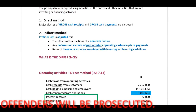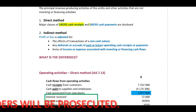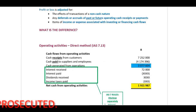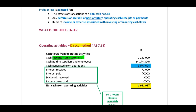The direct method presents the major classes of gross cash receipts and gross cash payments. Your direct method template starts with cash receipts from customers and cash paid to suppliers and employees, and then you take out all separately disclosable items - interest received, interest paid, dividends received, dividends paid, and income taxes.